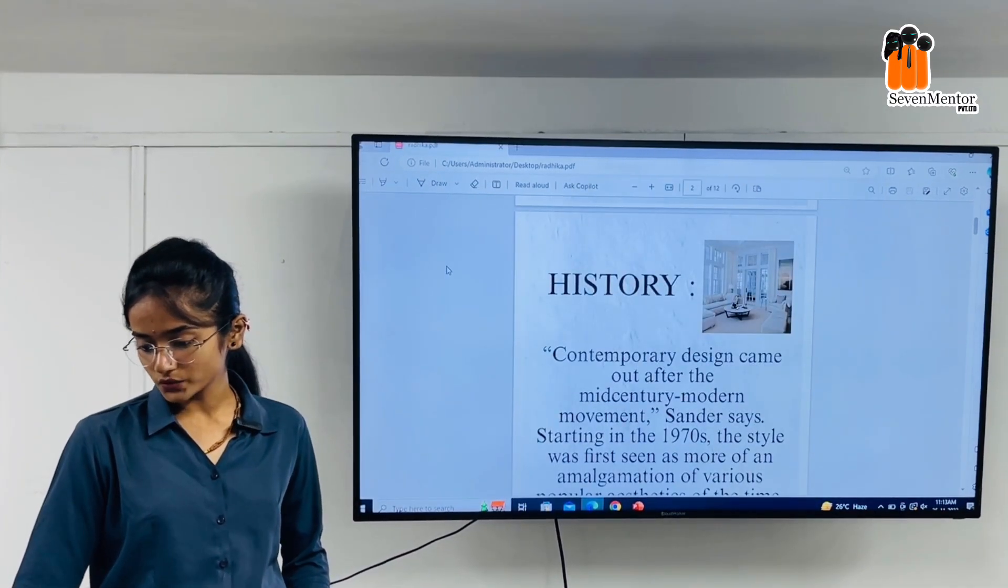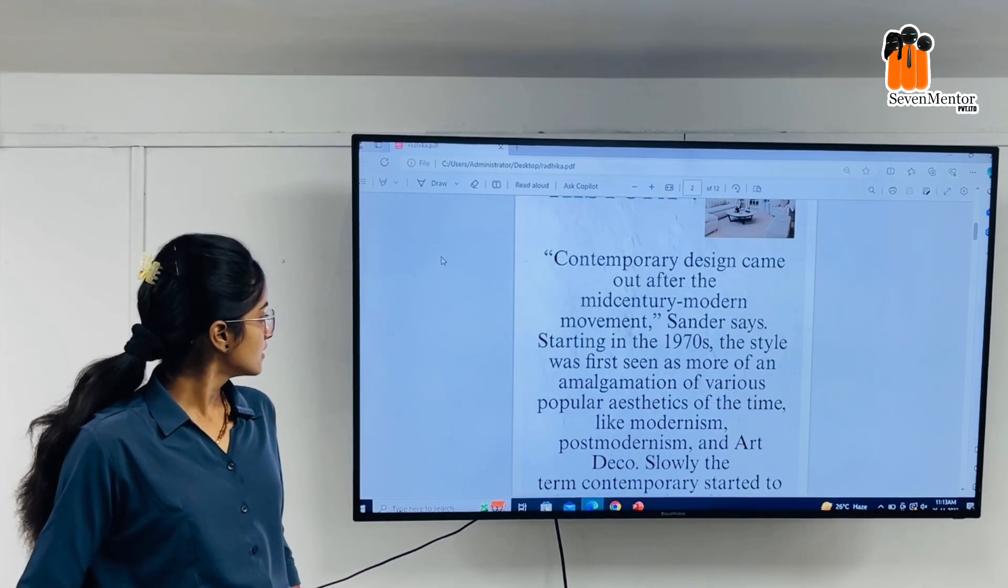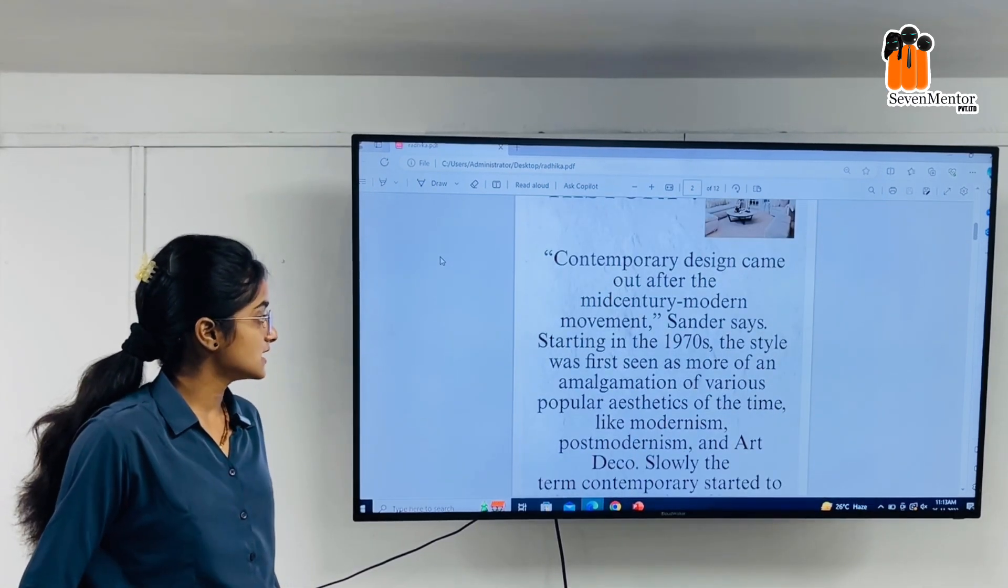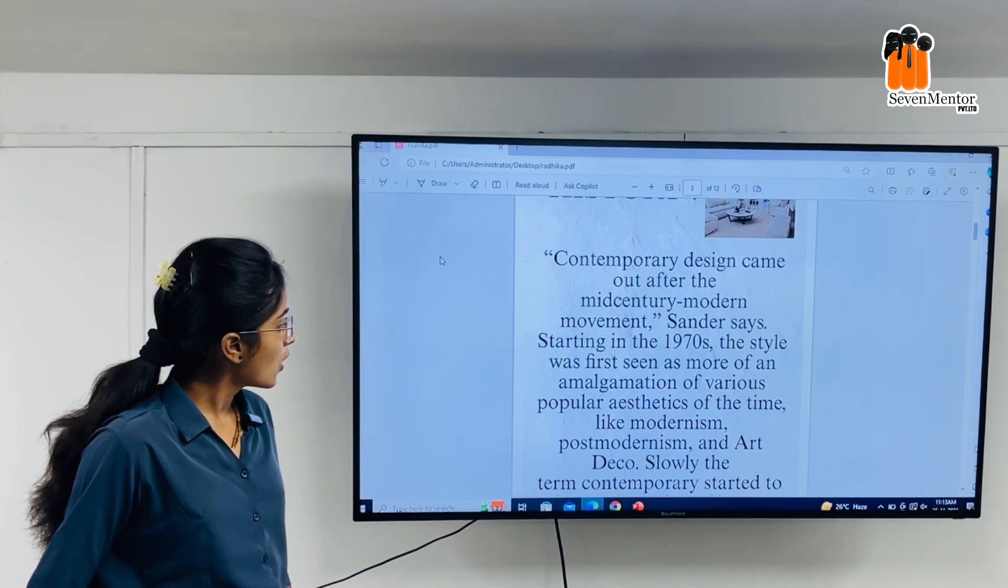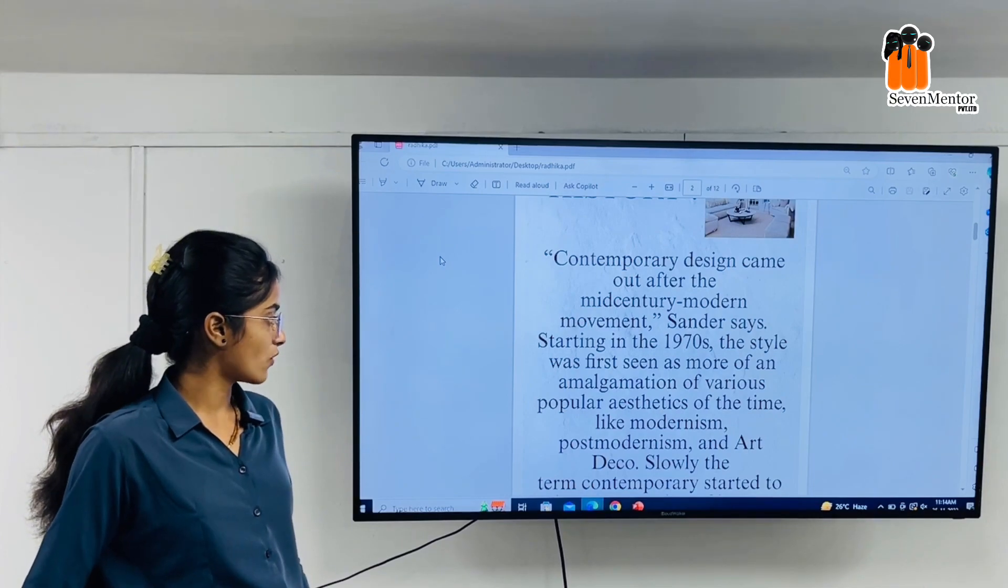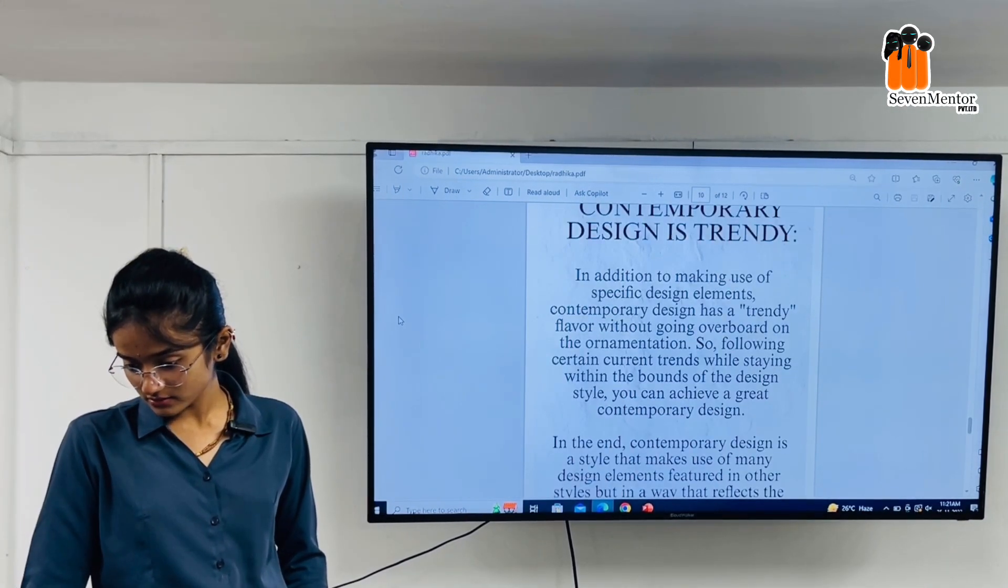Contemporary design came out after the mid-century modern movement. Starting in the 1970s, the style was first seen as more of an amalgamation of various popular aesthetics of the time, going overboard on the ornamentation.